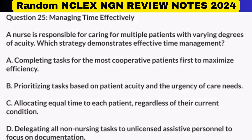Question 25: Managing time effectively. A nurse is responsible for caring for multiple patients with varying degrees of acuity. Which strategy demonstrates effective time management? A. Completing tasks for the most cooperative patients first to maximize efficiency. B. Prioritizing tasks based on patient acuity and the urgency of care needs.